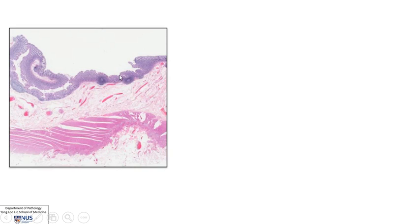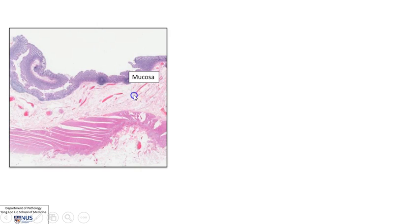Let's start by looking at the normal GI wall first. Here we're looking at a snapshot. Here is the mucosa, which is lined by epithelium — squamous if it's in the esophagus, and glandular if it's in the stomach, small and large bowel, and again squamous in the anal canal. This faces the lumen. Just below the mucosa is the submucosa, which is usually composed of loose connective tissue with some blood vessels.